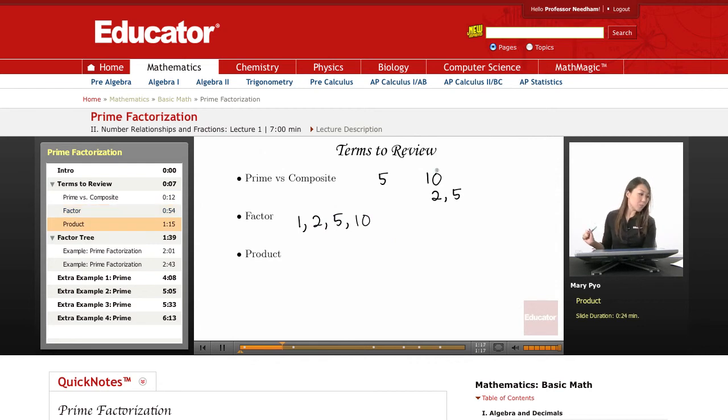Product. Product is a number where we multiply numbers together. So, the product of 2 and 5 is 10. So, product, you just multiply the numbers together.